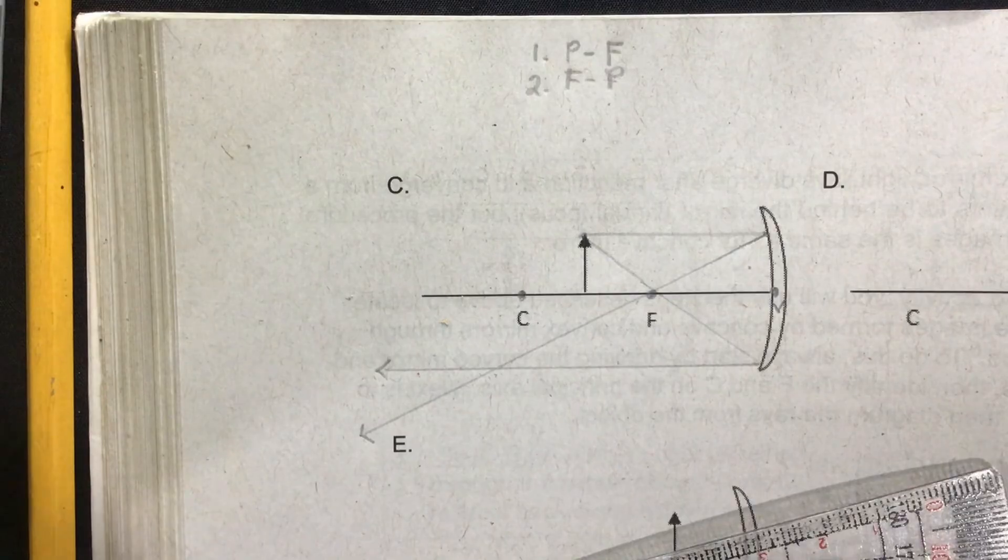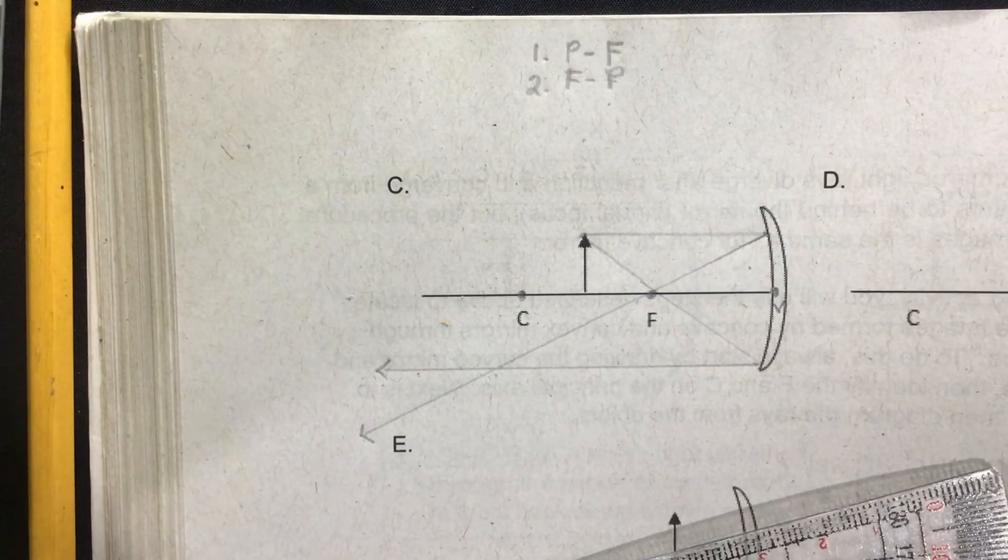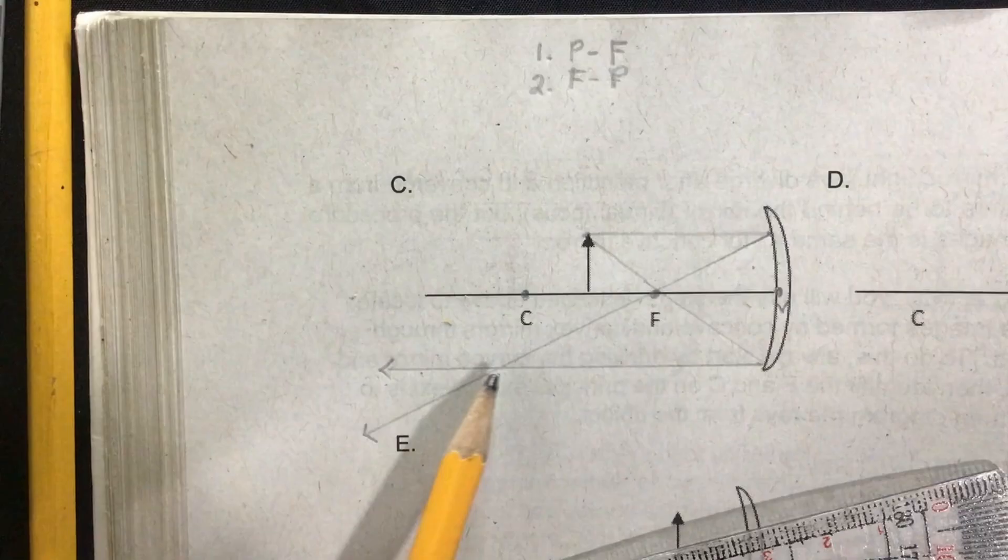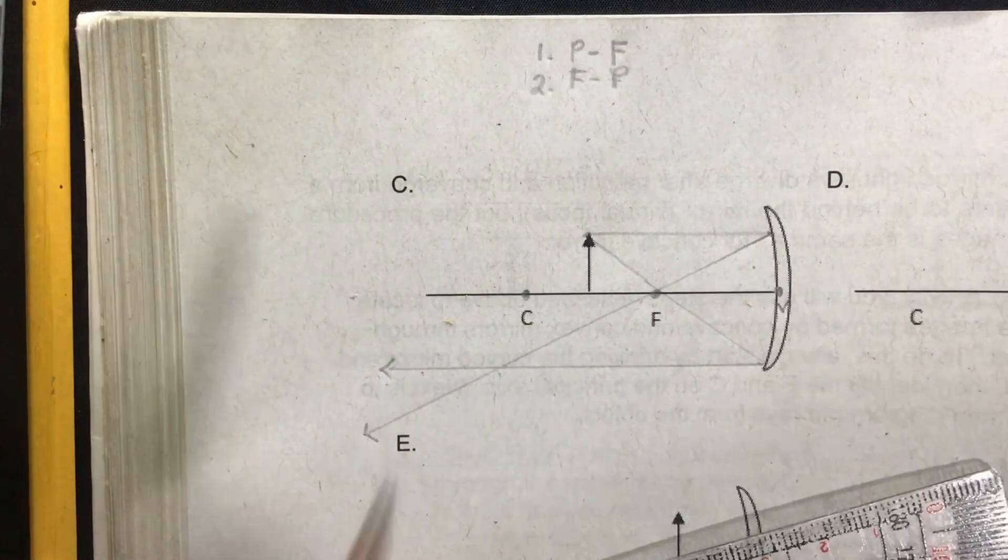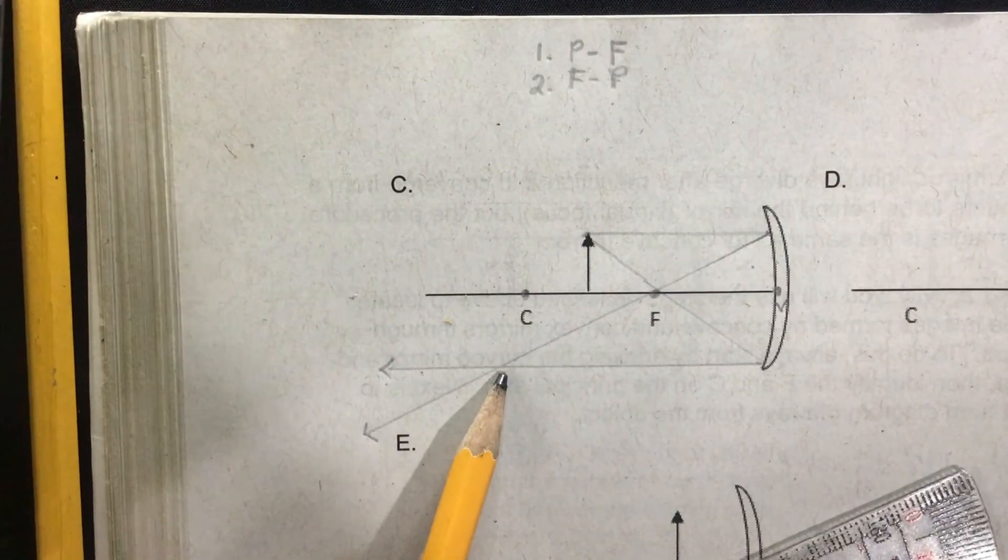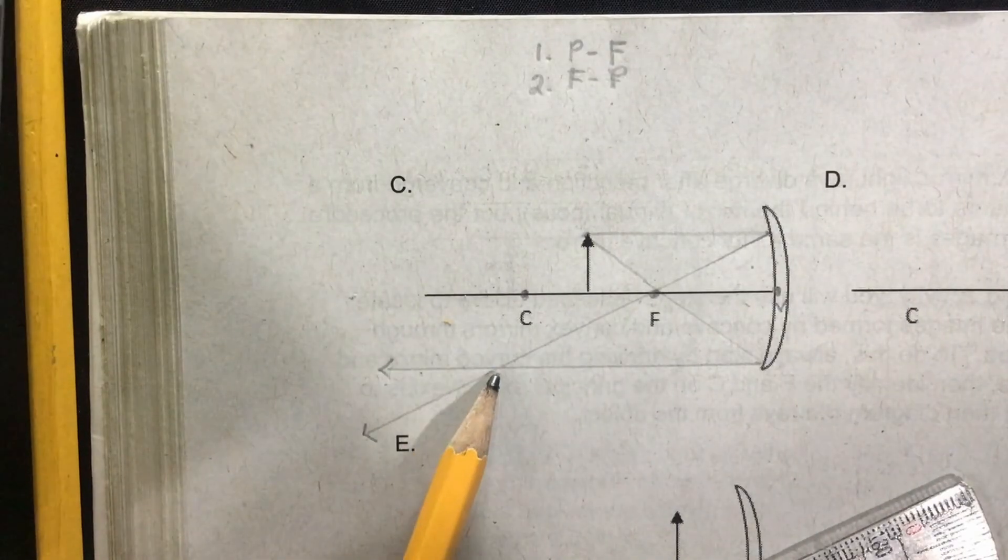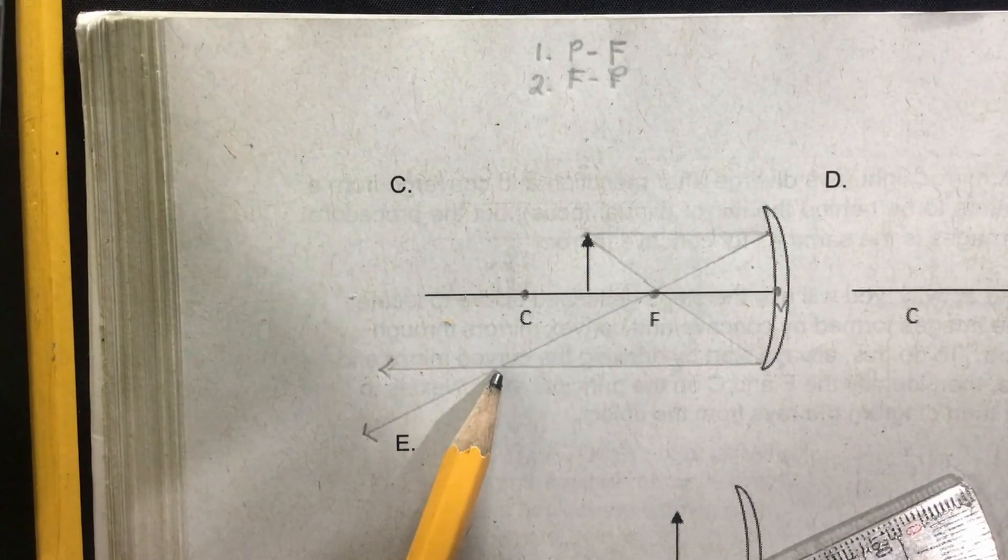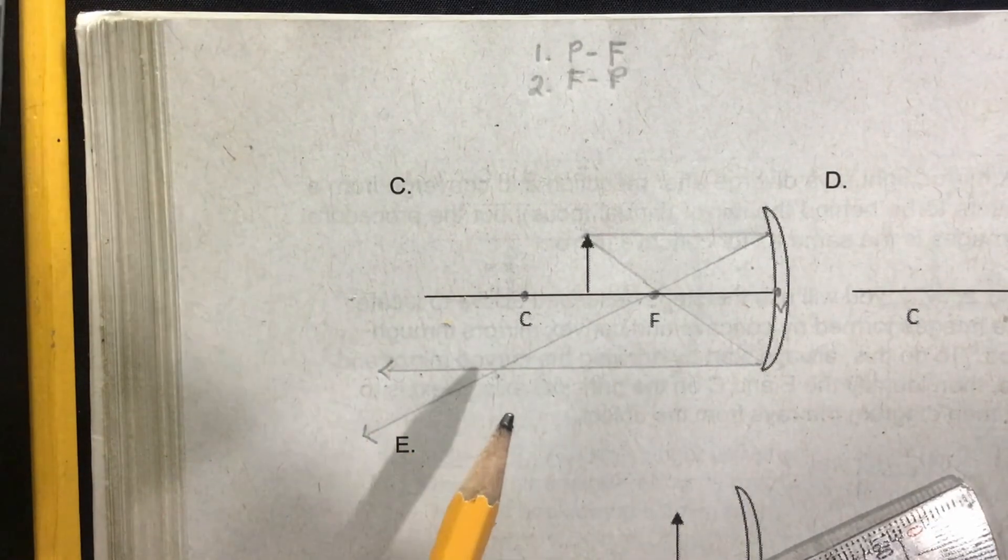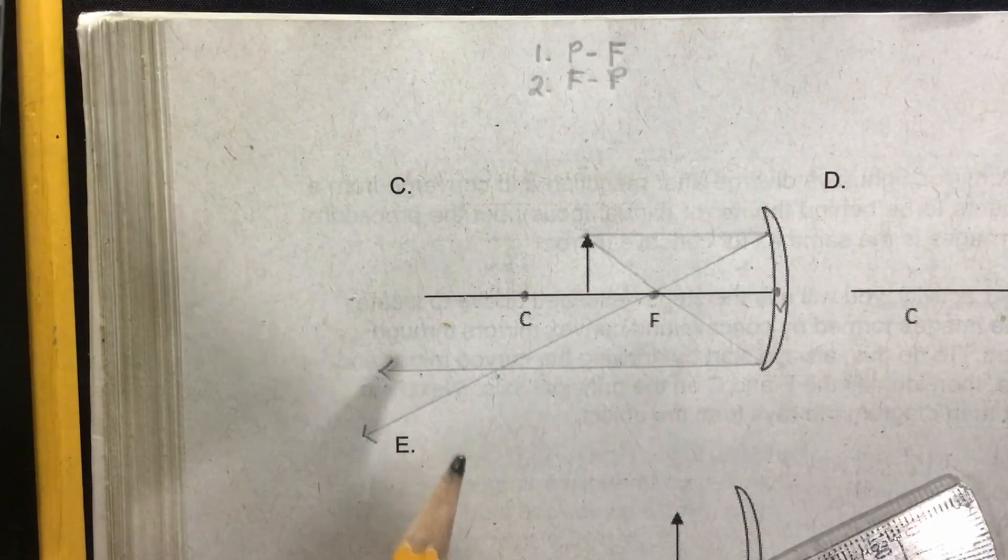Where do you think it is? Is it at this side? No. Is it at this side? Yes. So this is where our image is located. Now since the reflected rays intersect below the principal axis, therefore our image is inverted.